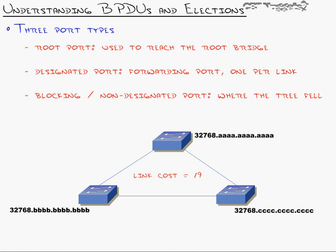Every Cisco switch runs Spanning Tree by default, so you can plug a network together with redundant connections and it won't have loops — it's just going to be a very inefficient network if the wrong root is elected. This is a CCNA-level topic, not covered in CCENT or ICND1, because it's relevant to enterprise networks with many switches. In a CCENT-level network you won't have hundreds of switches; when you get to larger midsize and enterprise networks, Spanning Tree plays a big role.